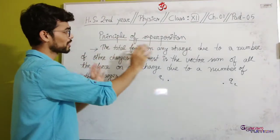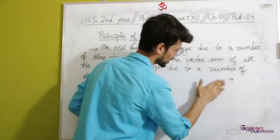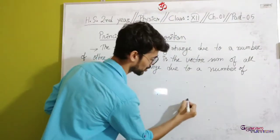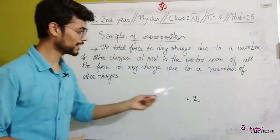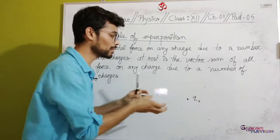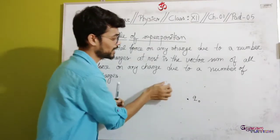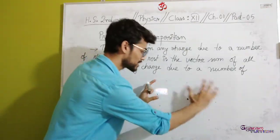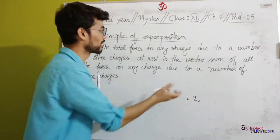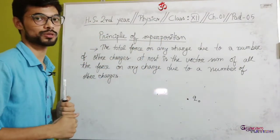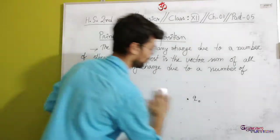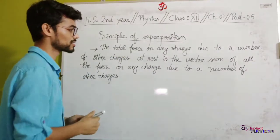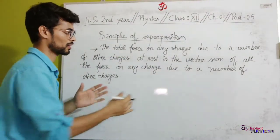The principle of superposition is the same as considering a lot of charges. I will specify Q0. If Q0 is the charge, the charge will be the same as the system. The charge represents all points in the space.